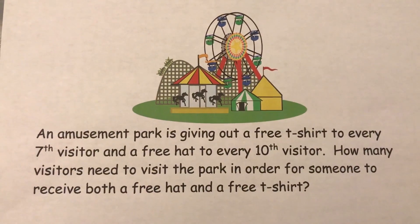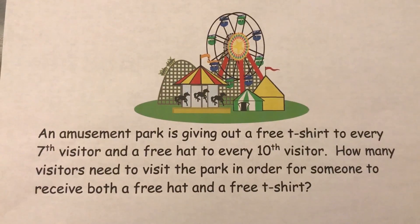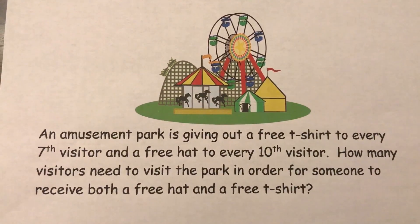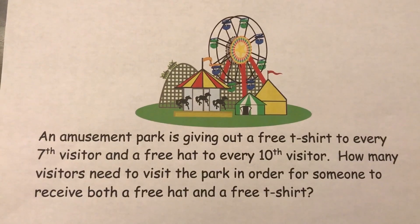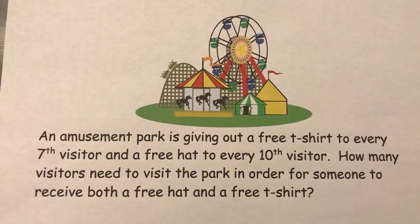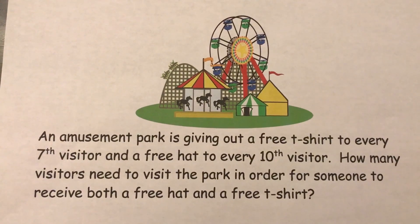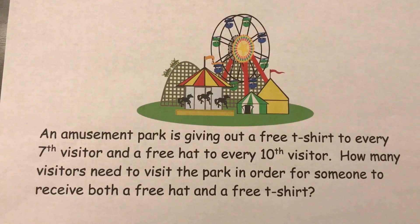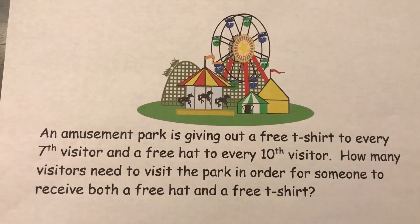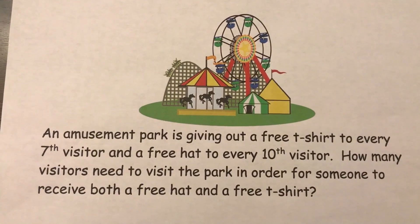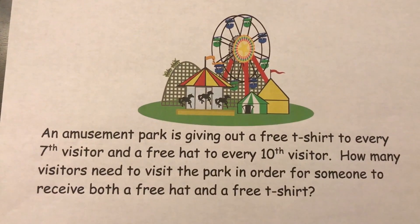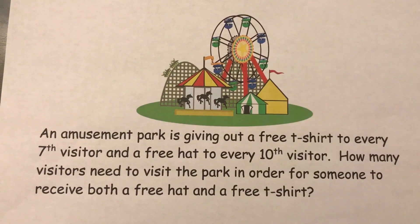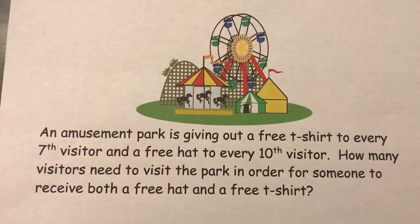Here's a situation where we need to find the least common multiple in order to solve the problem. An amusement park is giving out a free t-shirt to every 7th visitor and a free hat to every 10th visitor. How many visitors need to visit the park in order for someone to receive both a free hat and a free t-shirt?